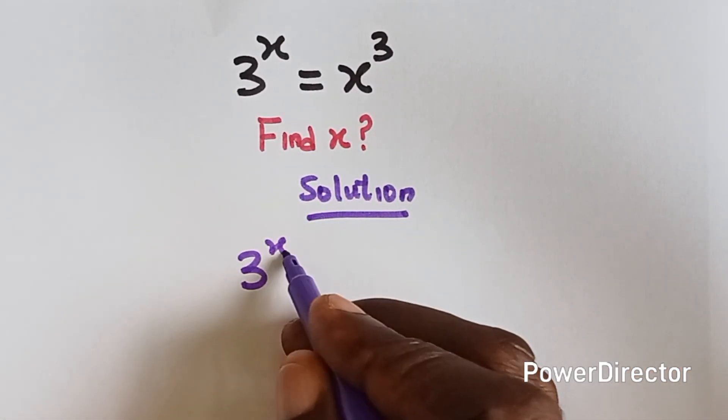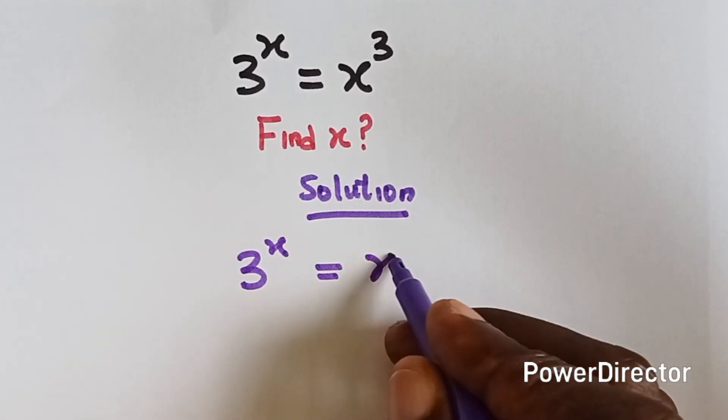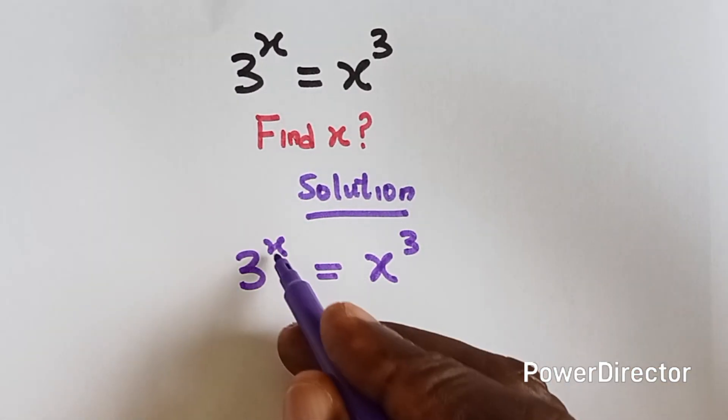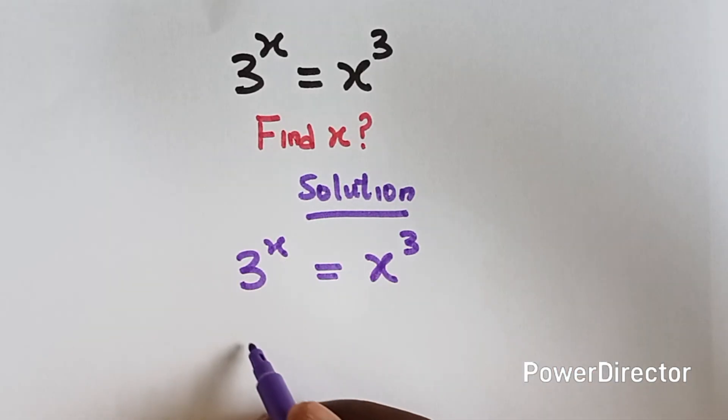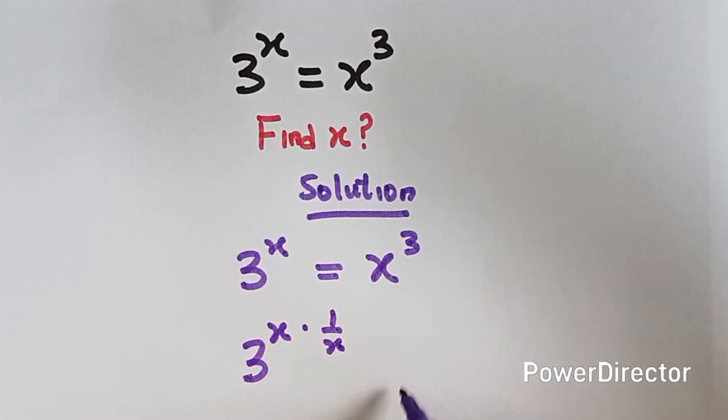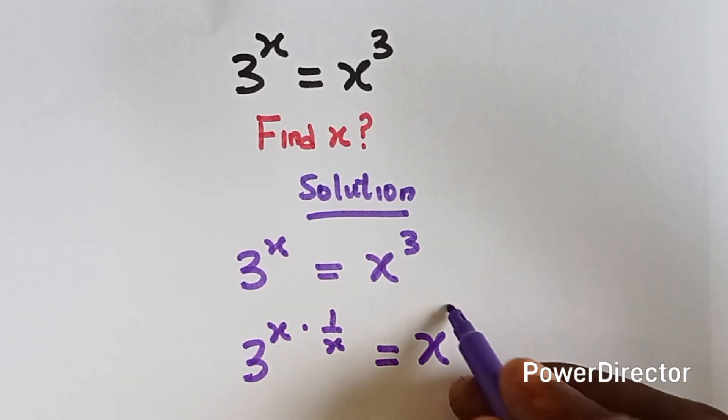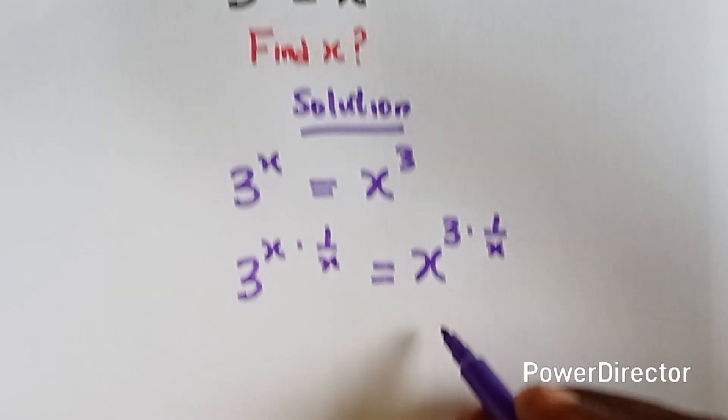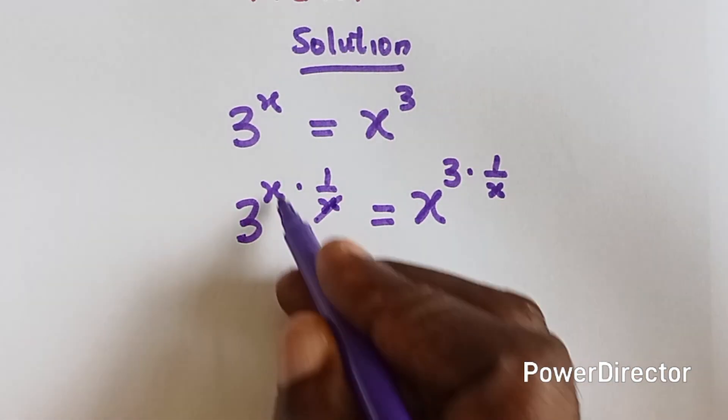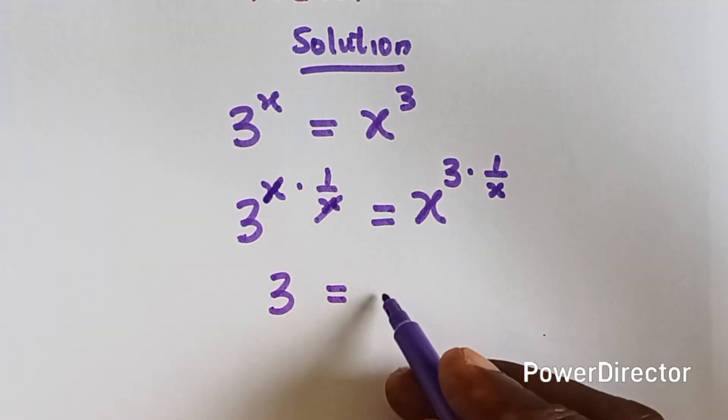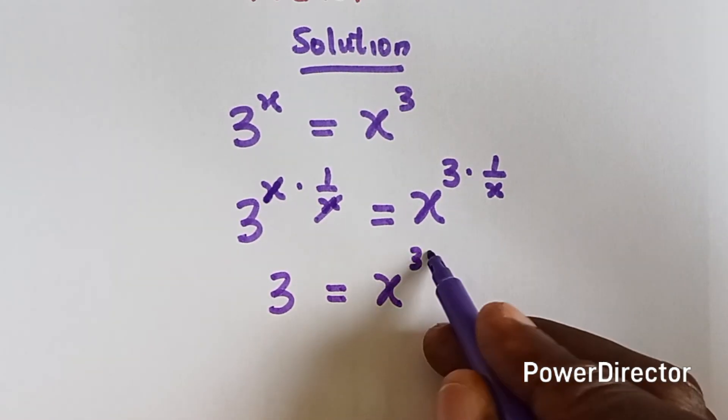We have 3 raised to power x equals to x raised to power 3. So what we are going to do is to cancel out this power x by multiplying it by 1 over x. Whatever we do to this side, we have to do to that side too. That means we are multiplying this power 2 with 1 over x. So the x here, we cancel this. So we have 3 raised to power 1 which is 3 and that is 3 over x.